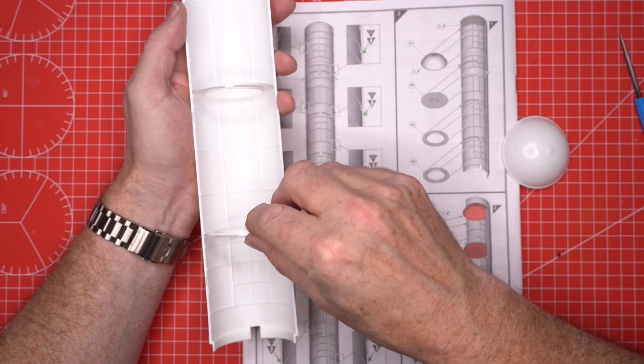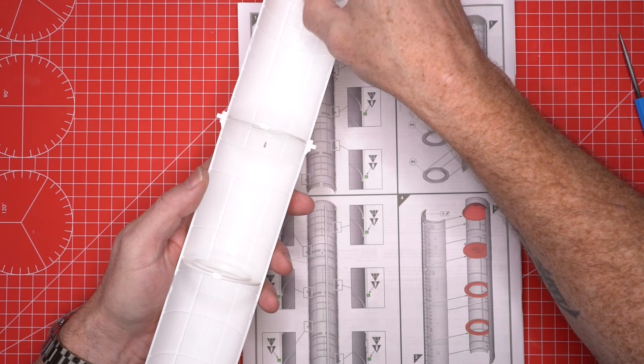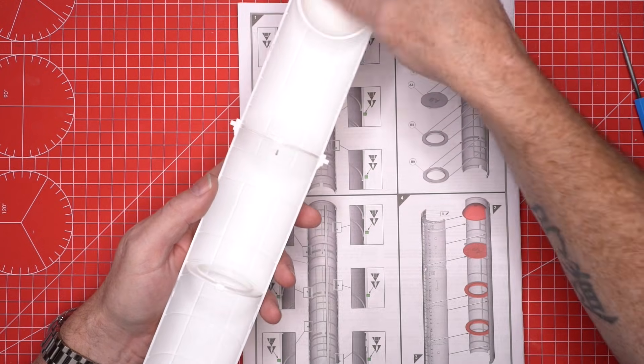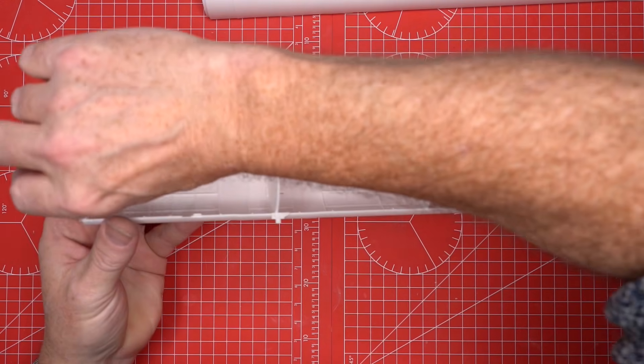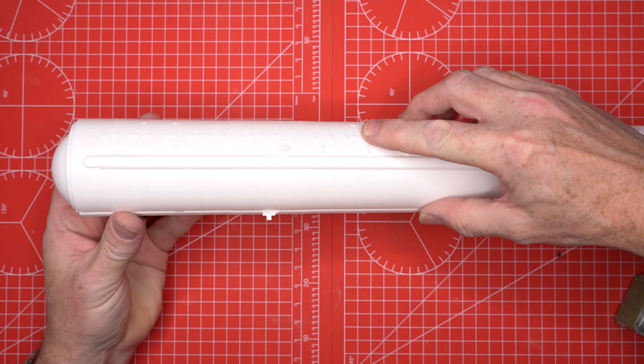Inside the tube we fit four internal formers. We slide the top circular former into place, making sure the key detail faces the correct direction. Then we set the remaining three formers down the length of the tube, each one strengthening the structure and guiding the final shape. Once everything sits square, we can now join the two halves.